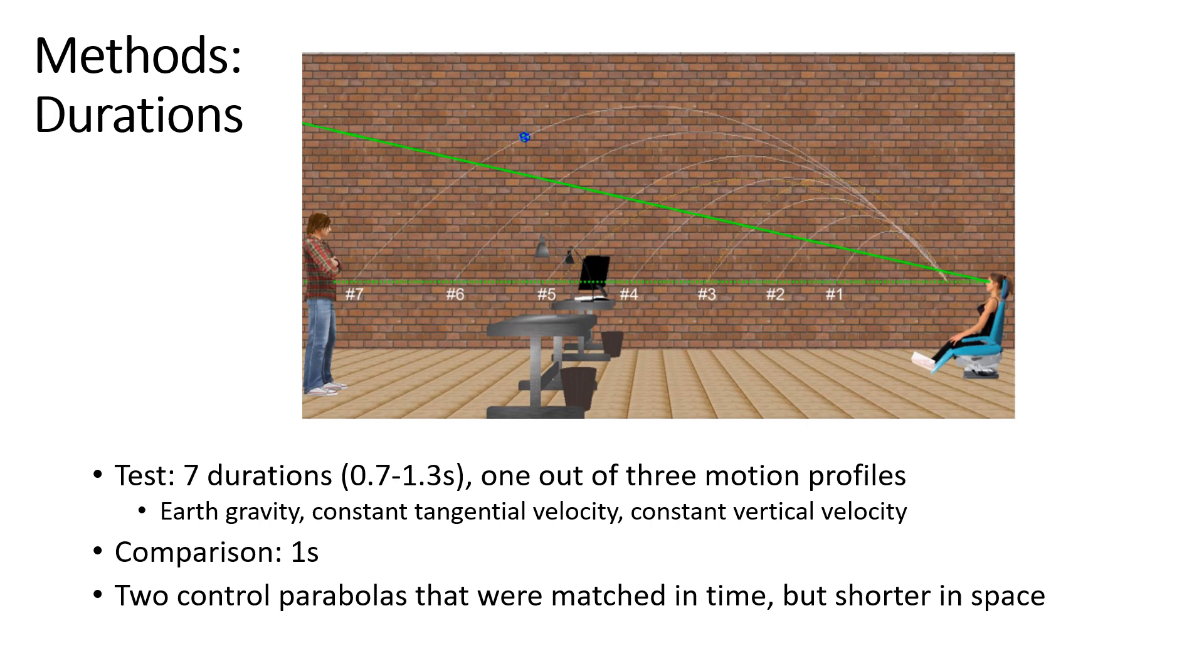So instead of controlling for it and matching it we added two control parabolas that were always one second long but we matched the initial vertical and horizontal speeds such that one started behind the comparison like the regular one second parabola and one in front. So if people really only used the distance to make these judgments then we would see that by comparing the two distance control parabolas to the comparison one.